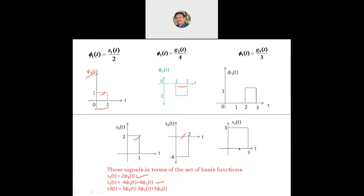To get S3(t), we merge all three basis functions: φ₁ from 0 to 1, φ₂ from 1 to 2, and φ₃ from 2 to 3. Multiplying 3 with φ₁, −3 with φ₂, and 3 with φ₃ gives S3(t) = 3·φ₁ − 3·φ₂ + 3·φ₃. This completes the representation of the given signals in terms of the set of basis functions found using the Gram-Schmidt orthogonalization procedure.